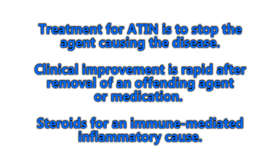The most obvious treatment for ATIN is to stop the agent causing the disease. Clinical improvement is rapid after removal of the offending agent. It's essential to take a thorough history — asking about new medications, recent doctor visits, and current medications — since the onset correlating with a new medication points to the causative agent. Since the list of potential causative agents is large, consider stopping the medication and observing the patient's response. The only other treatment besides stopping the causative agent is steroids, but a renal biopsy should be done before initiating steroid therapy.